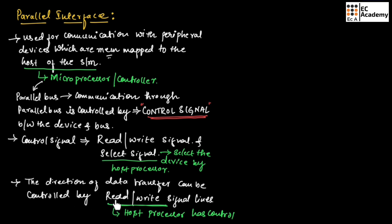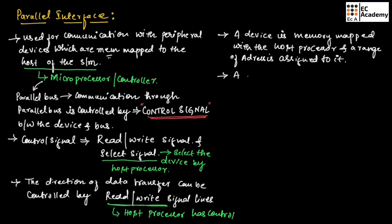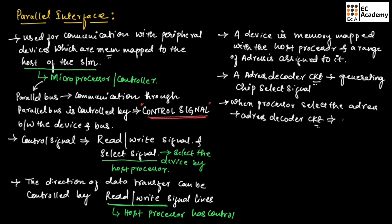A device will be memory mapped with the host processor and a range of addresses is assigned to it. An address decoder circuit is used for generating the chip select signal. When the processor selects an address, the address decoder circuit will activate the chip select line and thereby the device will become active.